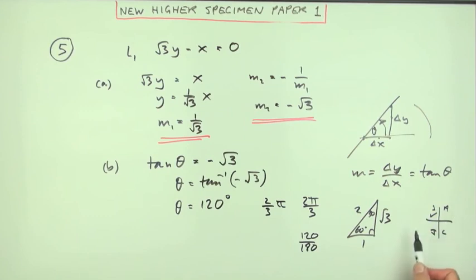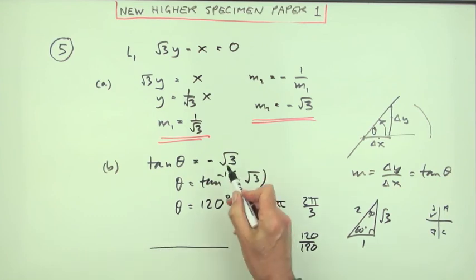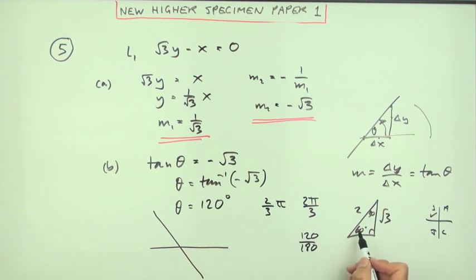You could just have considered the line itself. This line had a negative gradient, so it was sloping down, and that angle of 60 degrees would be the angle of a line that sloped up. So this must go down at 60 degrees, which means that's also 60 degrees. So the angle measured from the positive x-axis would be 120.